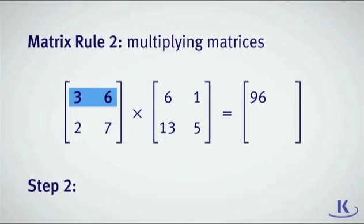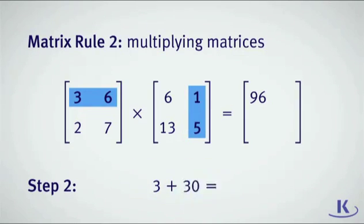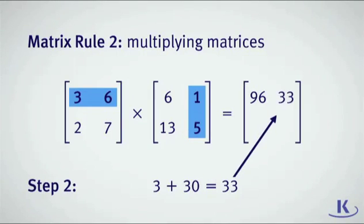With putting so much work into finding one number, it's a good idea to check your answer choices at this point in the problem. You can eliminate answer choices that don't have a 96 in the upper left corner. Now, it's time to work on the next number in the answer matrix. Let's look at the first row of the first matrix and the second column of the second matrix. You multiply 3 times 1 and add 6 times 5. Go ahead and put 33 in the upper right corner of the matrix.